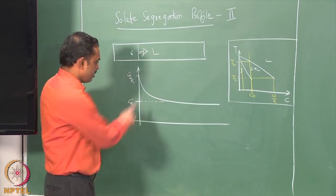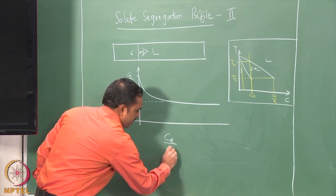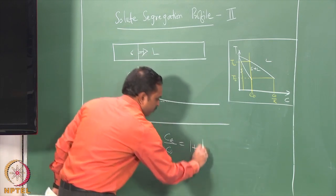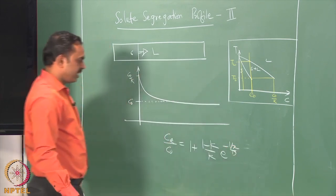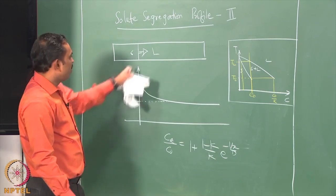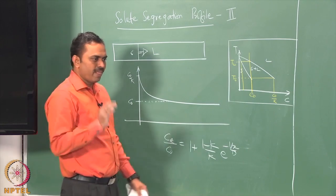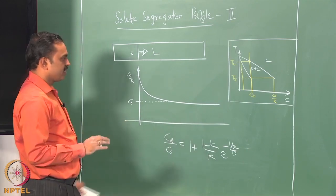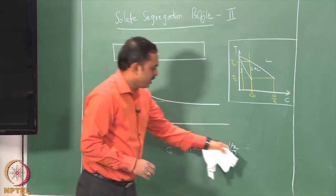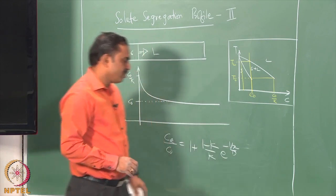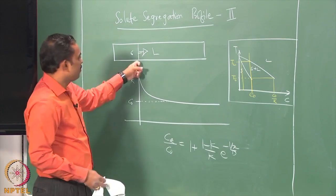This profile nature is already given in the previous part. We discussed the liquid composition given by this expression — exponentially decaying — where V is the velocity of the solid-liquid interface. In the fusion zone, V is related to the torch velocity by a trigonometric function depending on the distance from the surface of the weld to the bottom. D is the diffusivity of the solute in the liquid and X is the distance from the interface into the liquid.